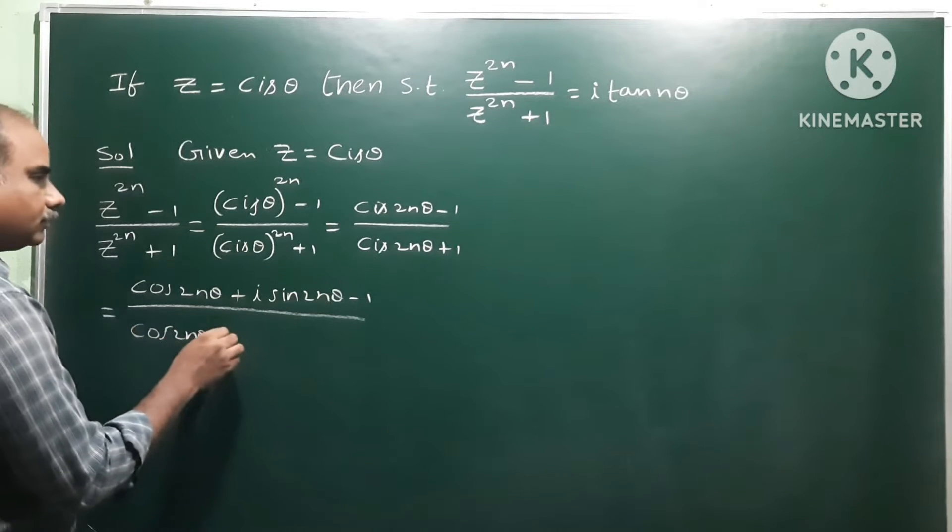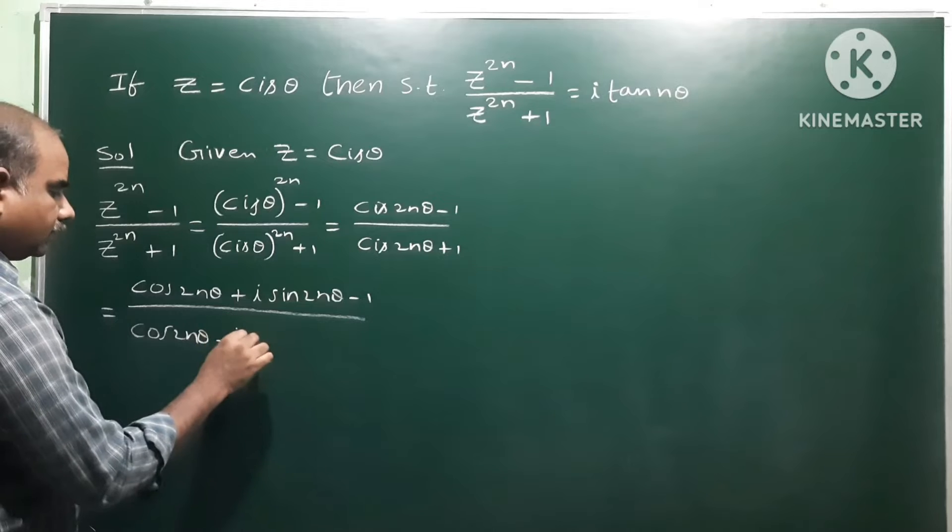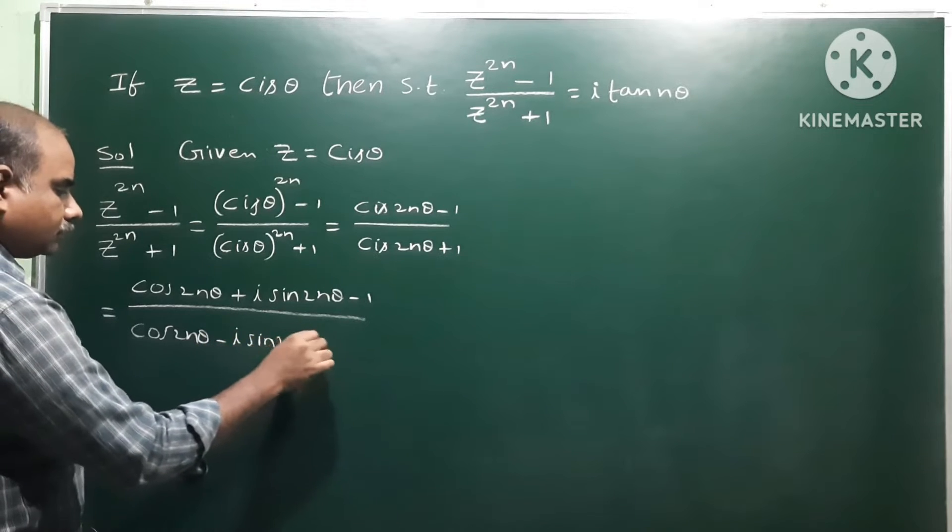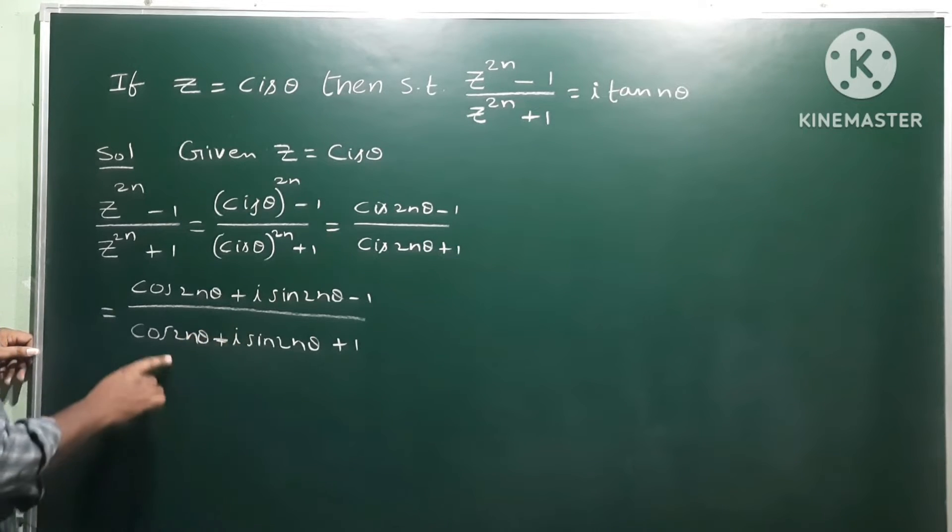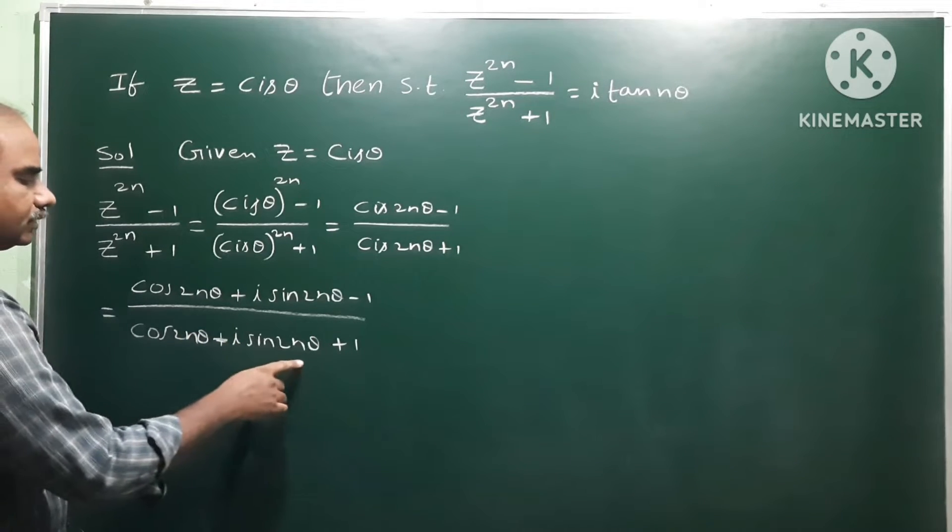cos 2nθ - sorry, plus cos 2nθ plus i sin 2nθ plus 1. So cis means cos plus i sin.